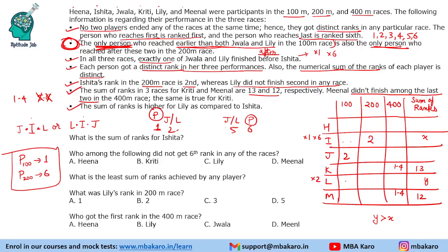Now who is person p? Ishita is ruled out. Lily is also ruled out since she is one of the two being compared. If Kriti is p, she would need ranks one and six, but her maximum rank is four — so Kriti is out. If Minal is p, giving her ranks one and six, her third race rank would need to be five to sum to 12, which is also not possible. Therefore, person p must be Hina. Hina has rank one in the 100 meter and rank six in the 200 meter race.